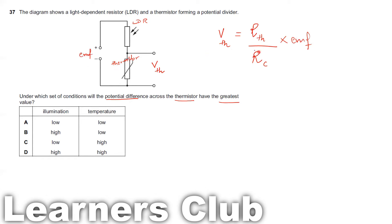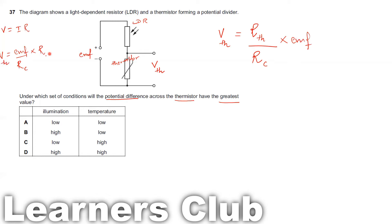You can also derive this using Ohm's law: V = IR, where current I = EMF divided by the combined resistance, multiplied by R. Since we are finding the thermistor's output voltage, we use the resistance of the thermistor in the formula.